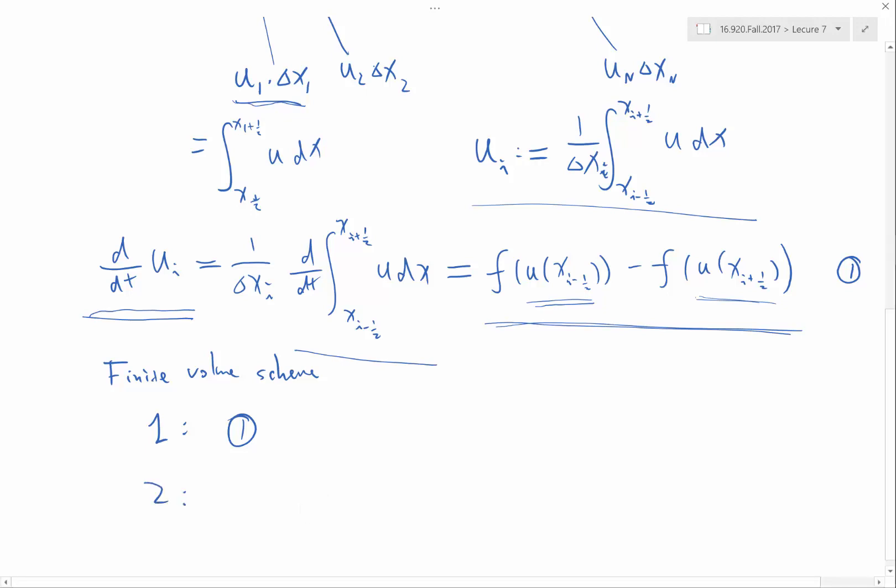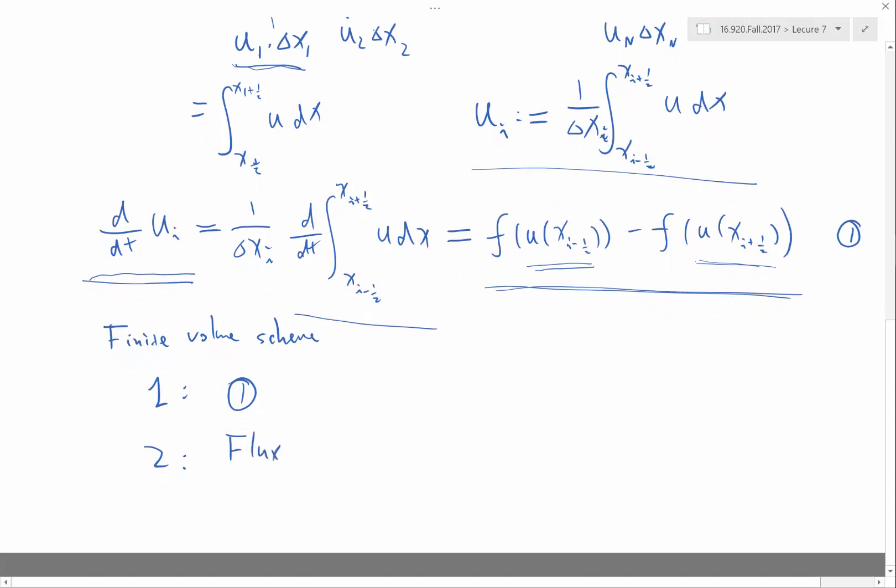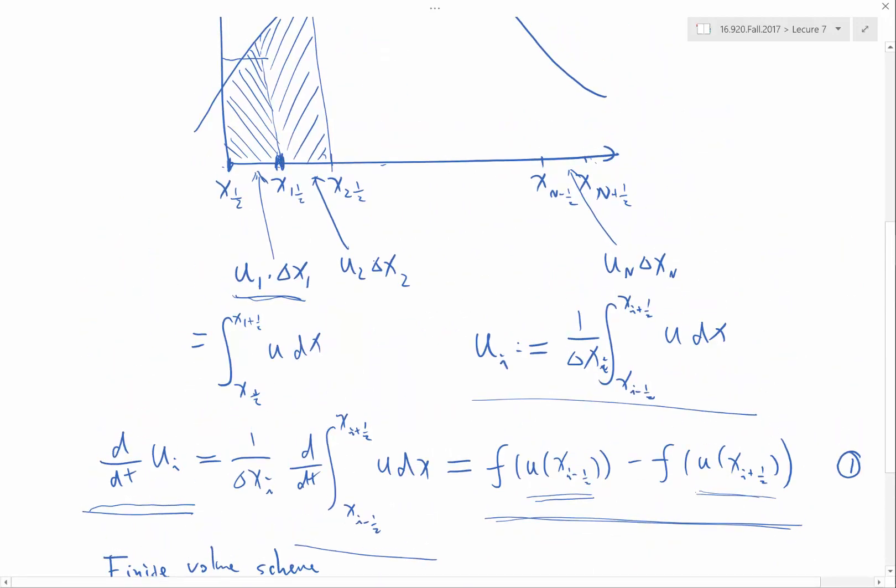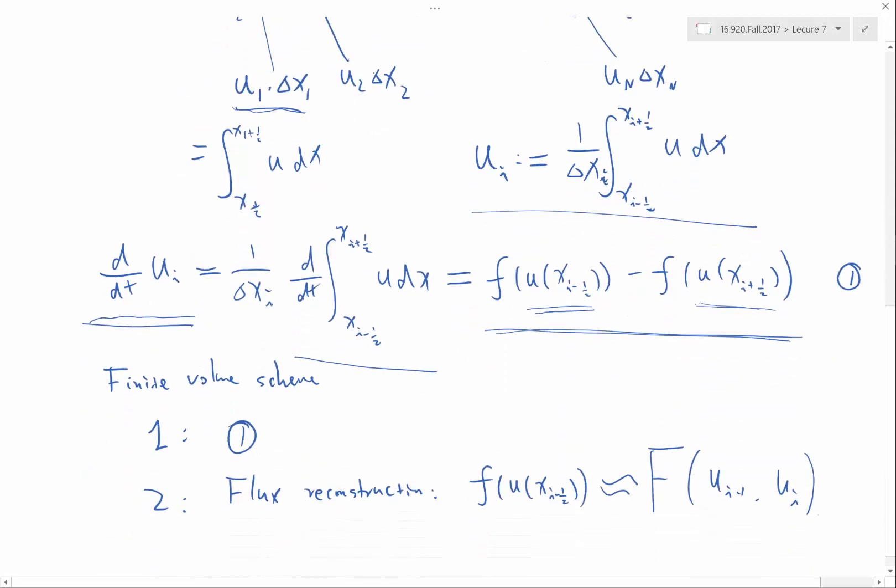And two, which varies for different finite volume schemes, is what's called the flux reconstruction. That is, approximate f(u) at a particular interface, for example, xi minus half, approximated as a certain function of ui minus 1 and ui. This is the simplest finite volume scheme: you reconstruct the flux at a particular interface using the volume average on the left and volume average on the right. More advanced schemes may look further. So flux reconstruction is using the values of cell averages to approximate the value of the flux at the interface.